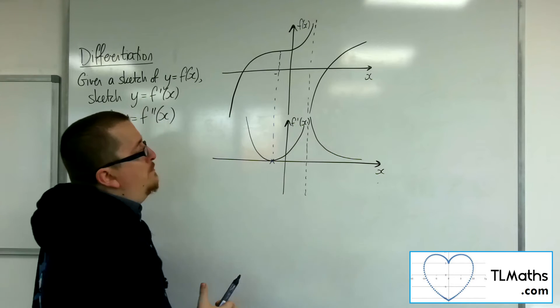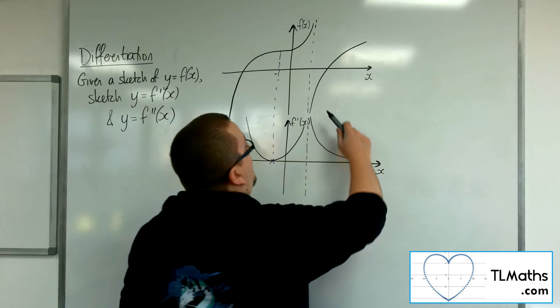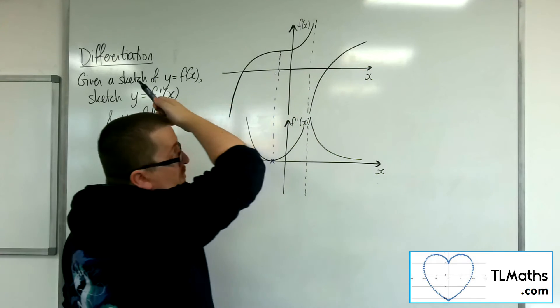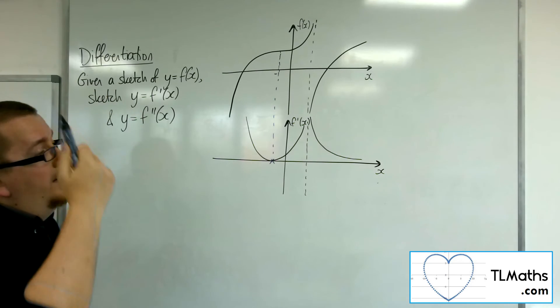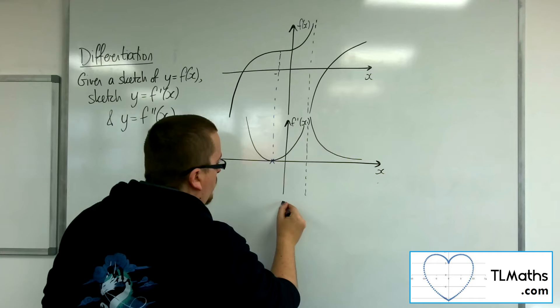That's really as much as we could really draw with the information that we have. It could be logarithmic, where it just continues to increase, but ever more slowly. We just don't know.